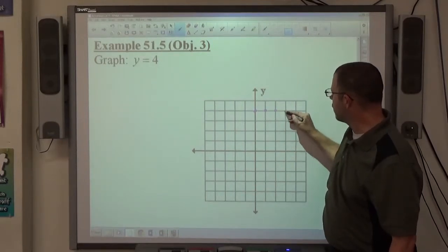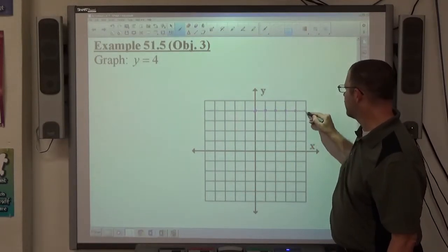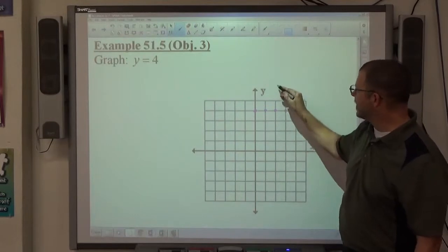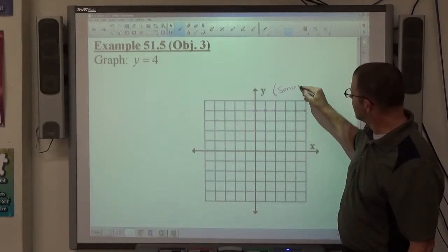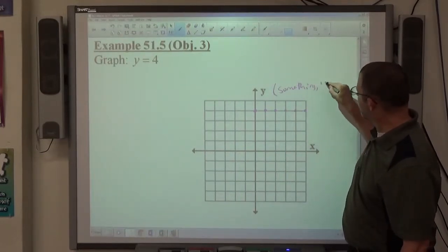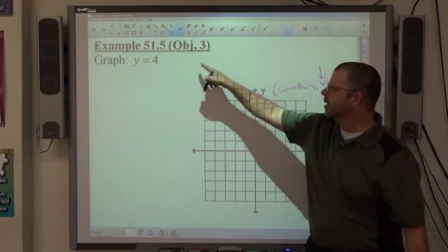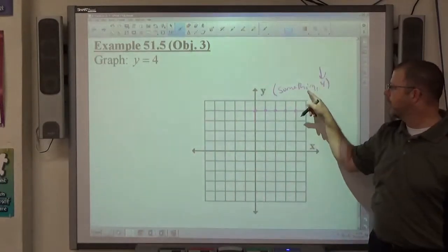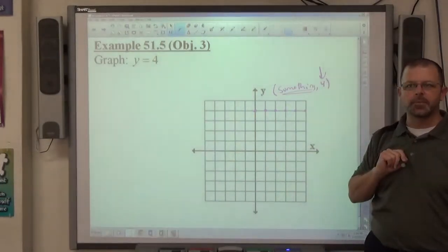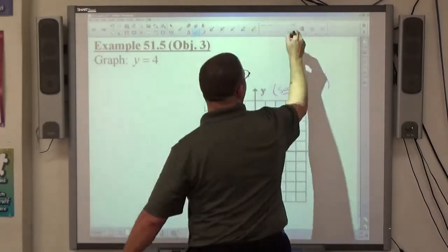There's 2, 4. There's 3, 4. There's 4, 4. There's 5, 4. Every one of those points is something comma 4. That has to happen because that's what the equation tells me, but this is anything we want it to be.